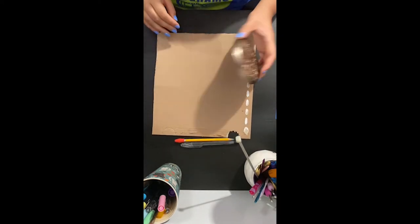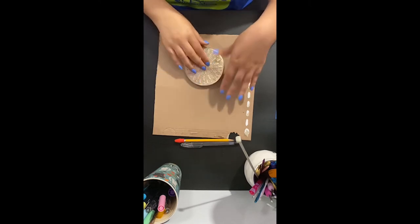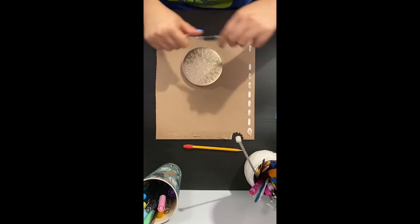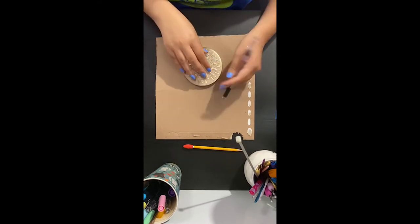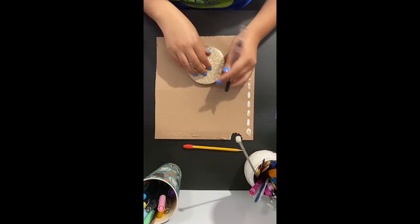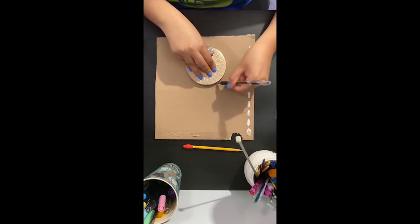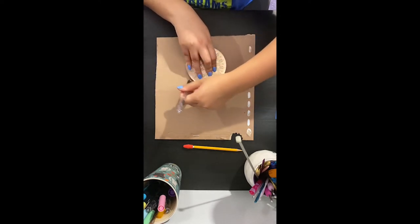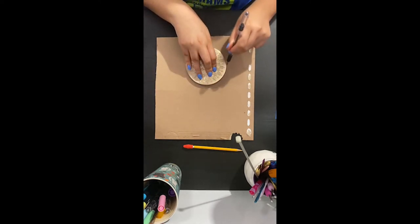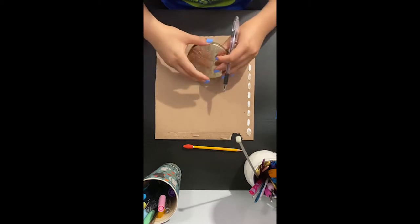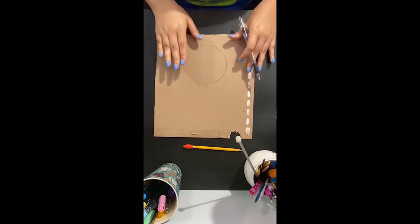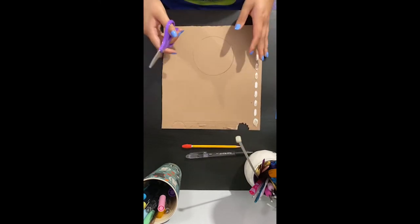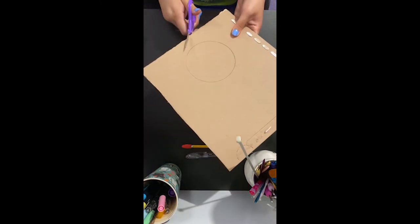So to start we're going to take our circle and we're going to place it down onto the cardboard and with a pen or a pencil I'm going to choose a pen. You're going to place it down, hold it down with one hand and with the other you're going to trace a circle around. So now once you have this circle you're going to cut it out with your scissors. Be very careful so you don't cut yourself.